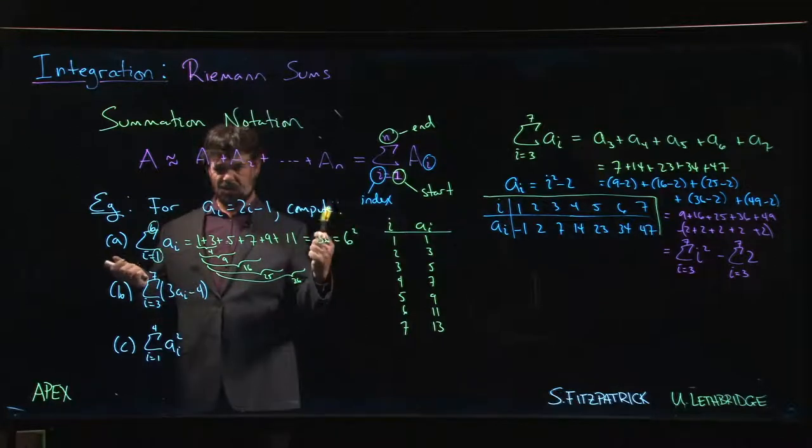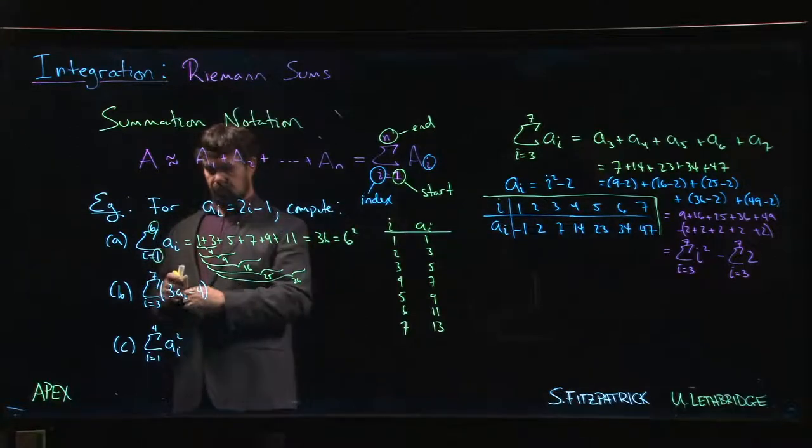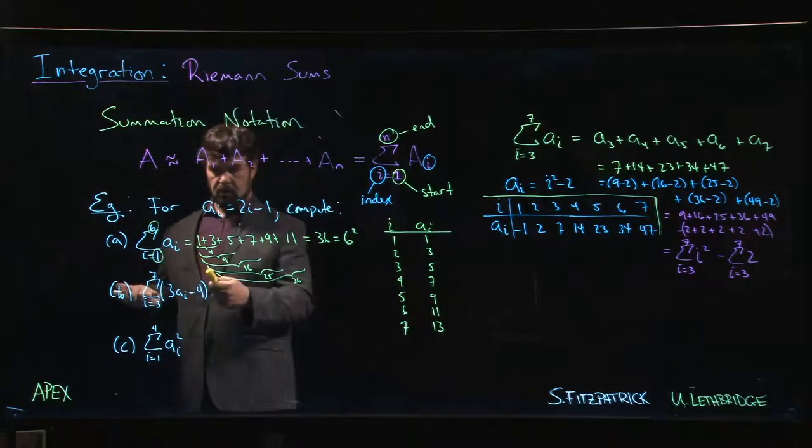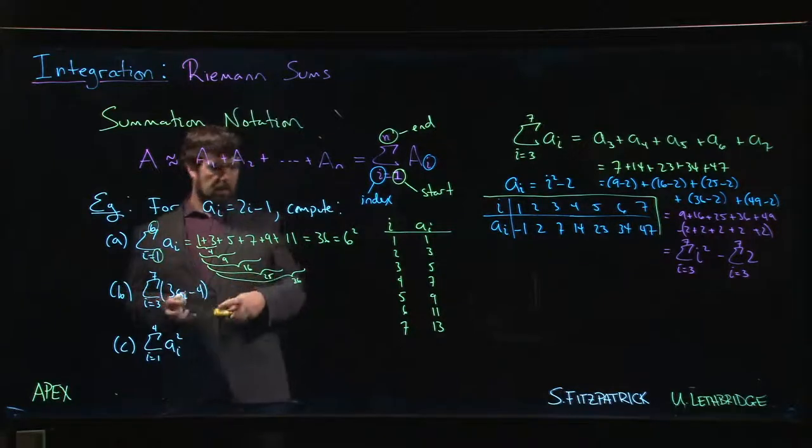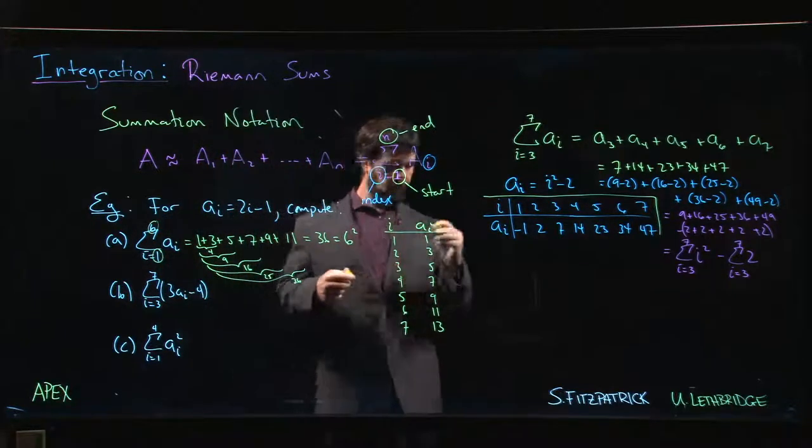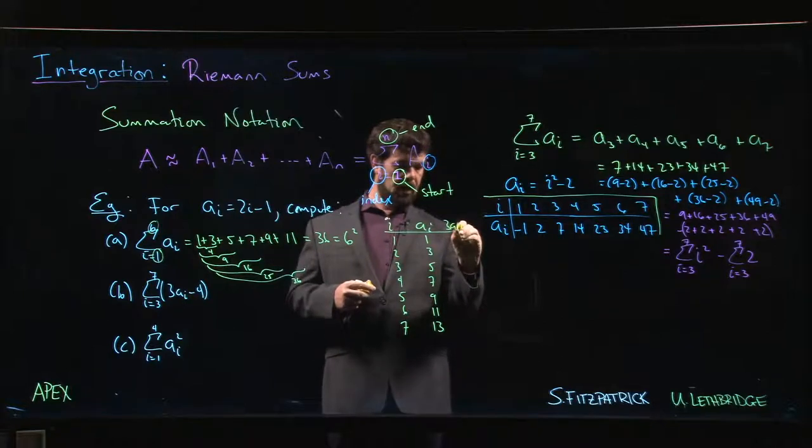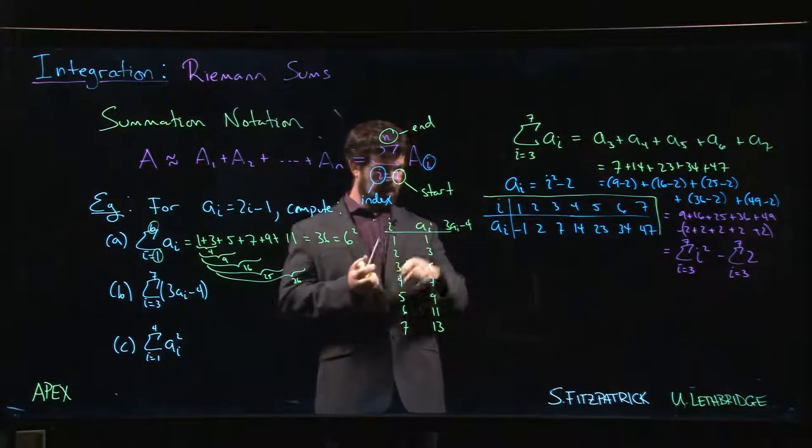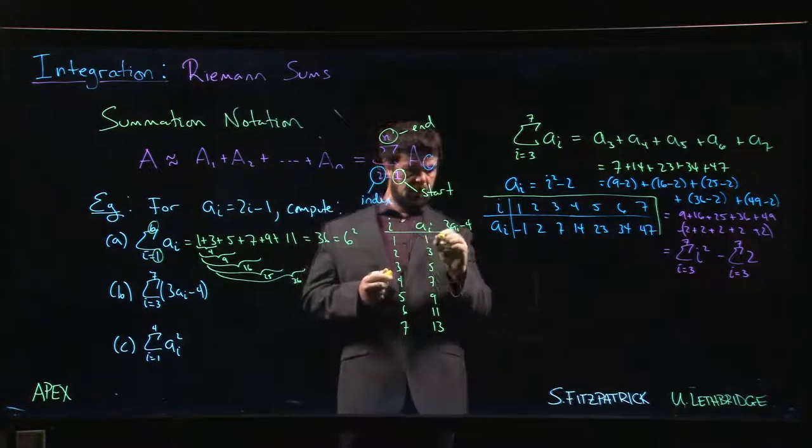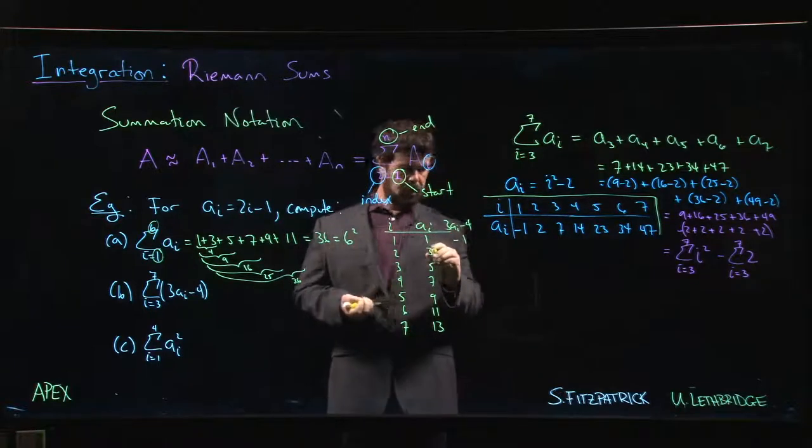Okay, it's an interesting result though. The next one: three a_i minus four. What do we do with that? Well, I guess we can come back here and we can say, what if I want to do three a_i minus four? So we take the numbers that we had: three times one minus four is minus one, nine minus four is five, fifteen minus four is eleven.